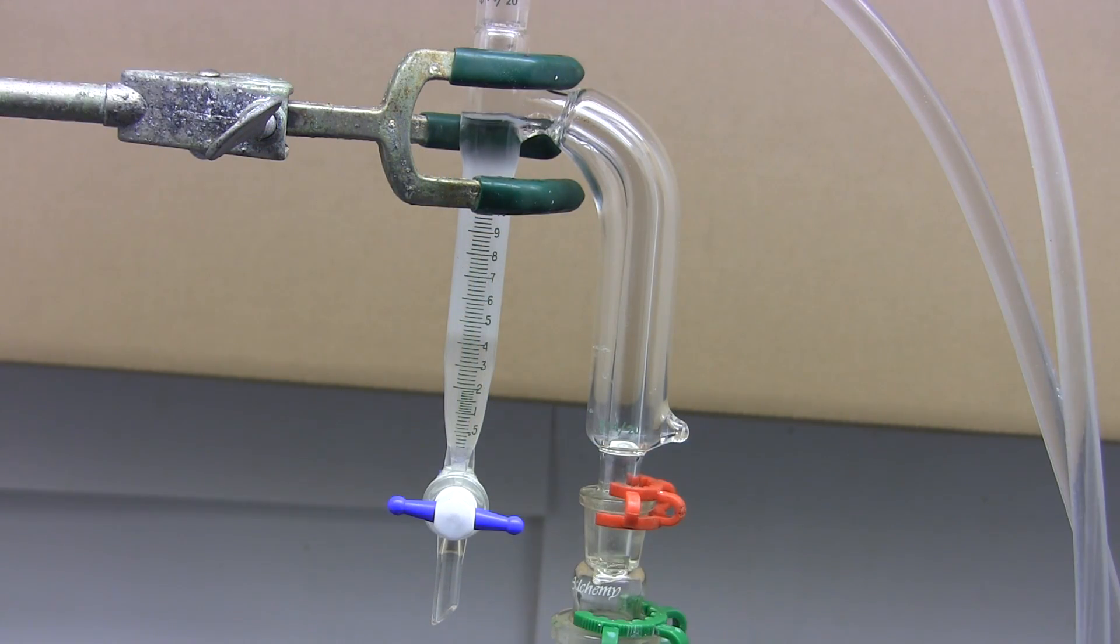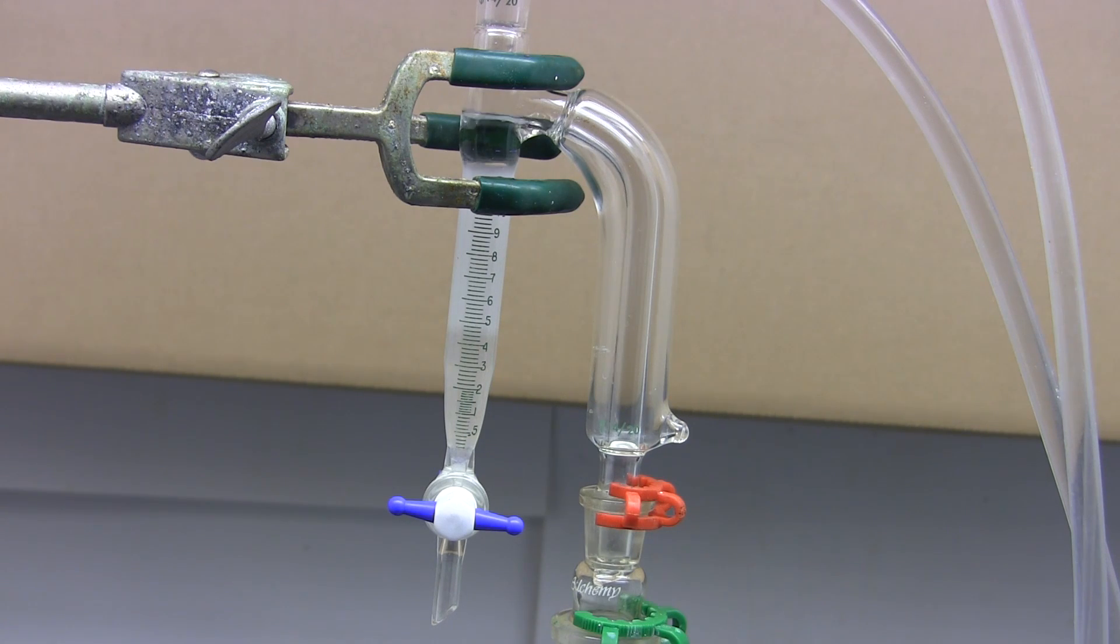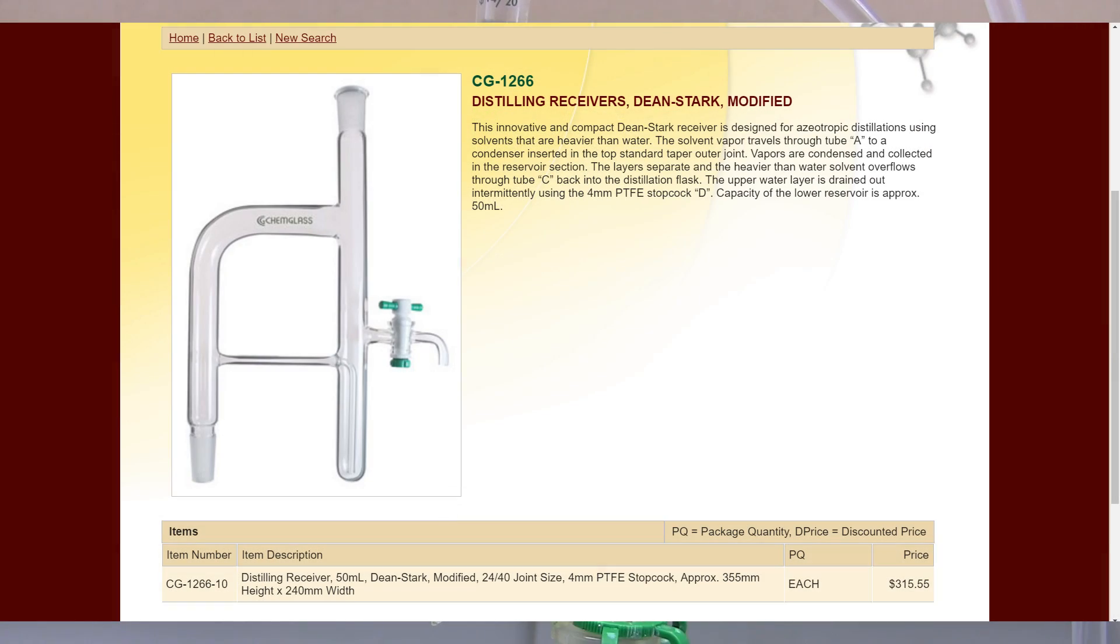But what if we want to do the opposite? What if we want to return the heavier phase and keep the light phase? This is especially important for herbalists, botanists and other scientists that collect oils and chemicals from natural sources. They use steam distillation where boiling water carries the oils out in the steam. This professional Dean-Stark trap only returns the lighter phase and cannot be easily modified to return the heavier phase. We could purchase a trap specifically for returning heavier phases but those are even rarer and more expensive.